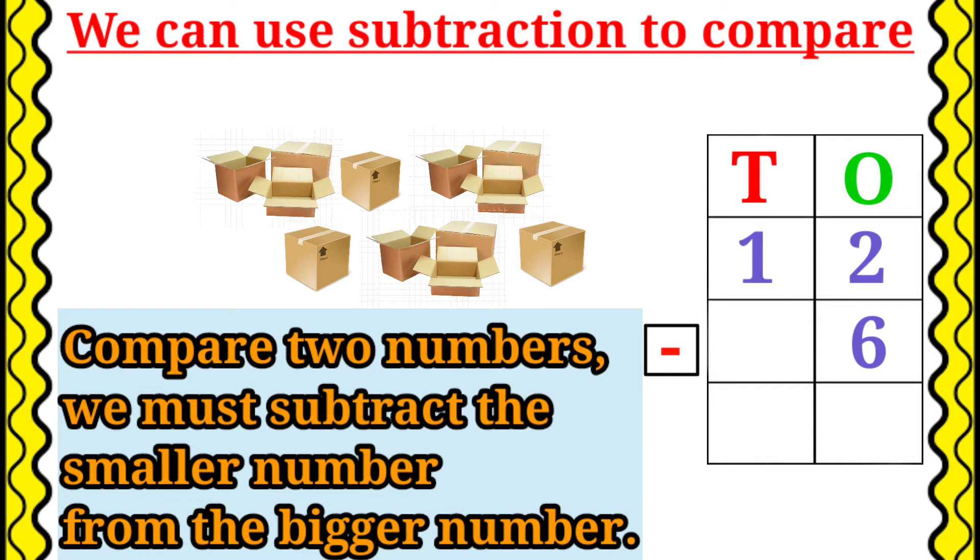Now, we are going to count how many boxes are closed. 1, 2, 3, 4, 5, 6. Here 6 boxes are closed. So, 12 minus 6 is equal to 6.